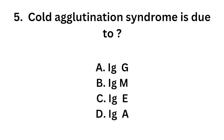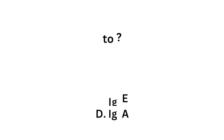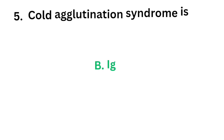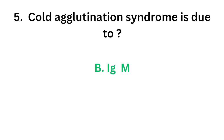Question 5. Cold agglutination syndrome is due to: Option A, IgG; Option B, IgM; Option C, IgE; Option D, IgA.